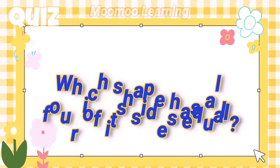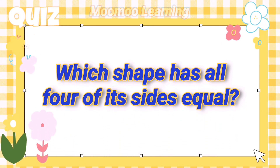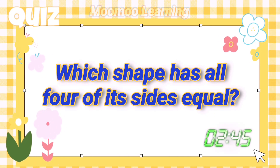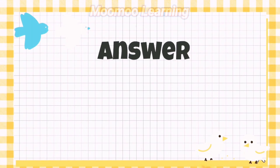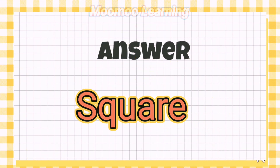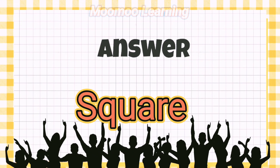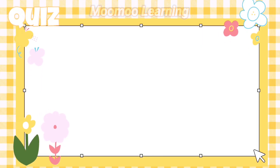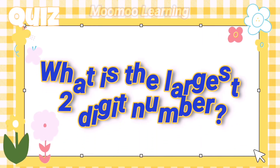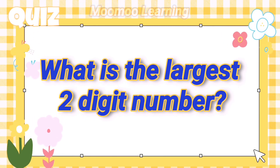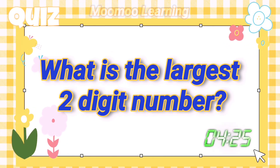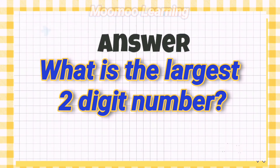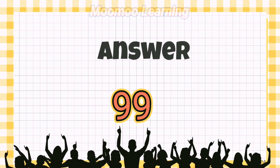Which shape has all four sides equal? Answer: Square. What is the largest two-digit number? Answer: 99.